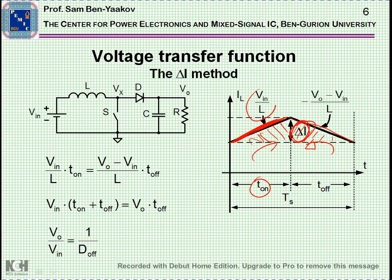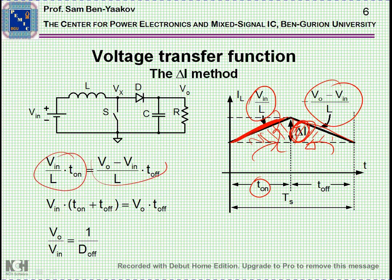We know the slope here — the slope is V in over L. The slope on the other side is minus V out minus V in over L. Therefore, we can calculate this height and this height, and equate the two. After simple manipulation, you obviously get the same result.